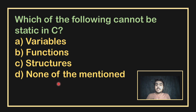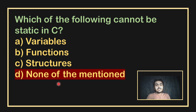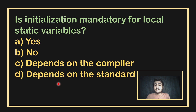Which of the following cannot be static in C? Static means something that we can make persistent. Variables can be static, functions can be static, and structures can also be static. So all of the above can be static.